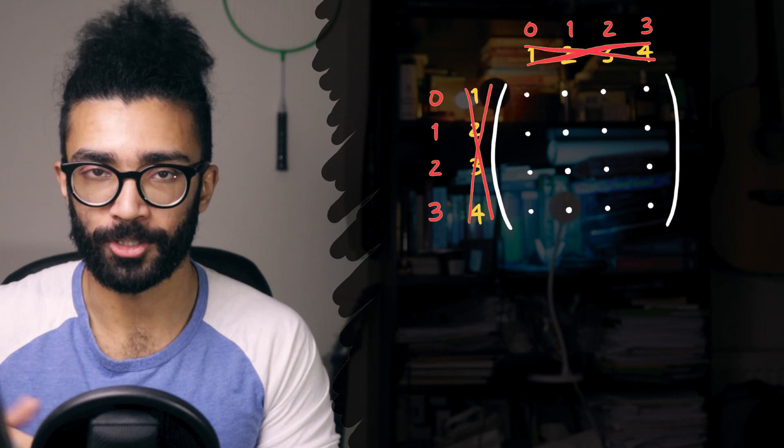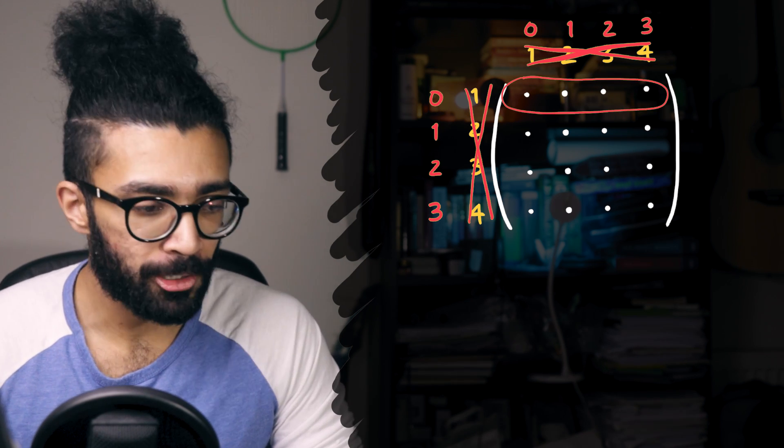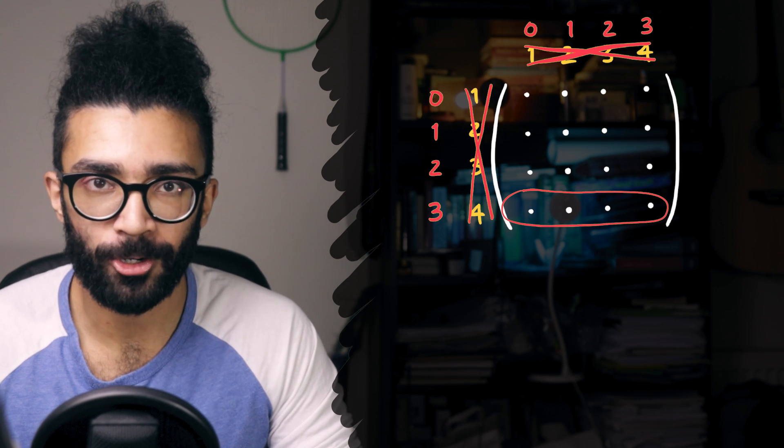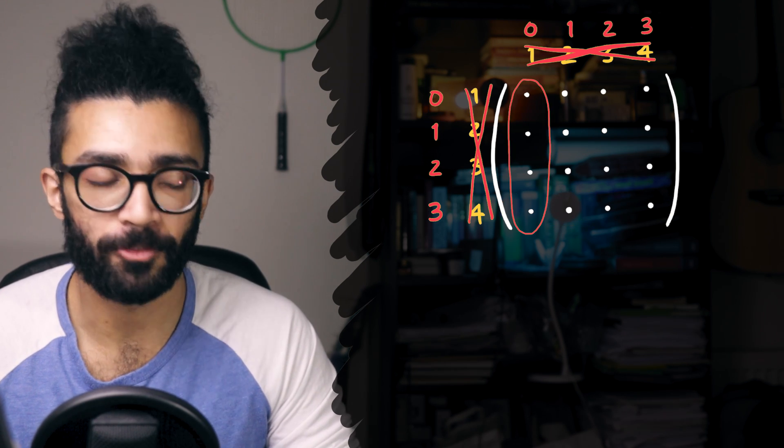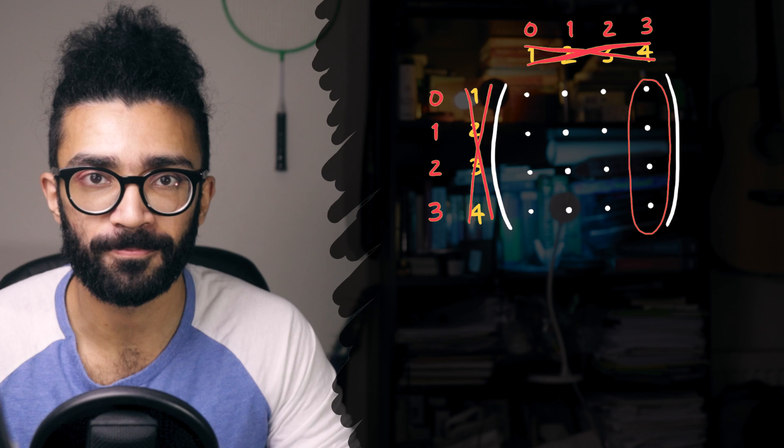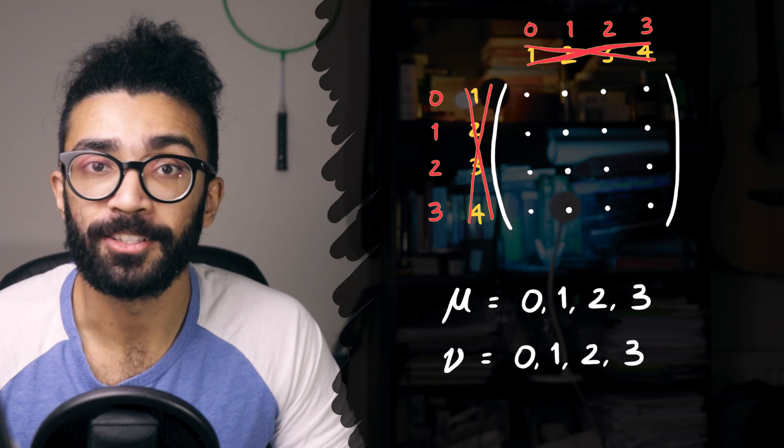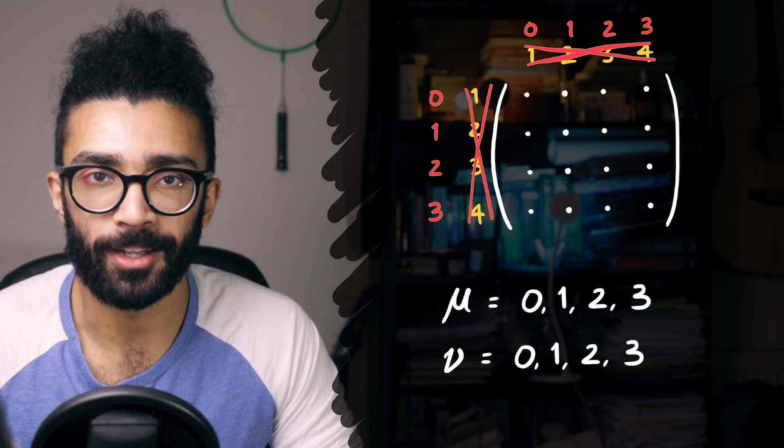Rather than 1, 2, 3, and 4. So we've got the zeroth row, first row, second row, and third row. And similarly, we've got the zeroth column, first column, second column, and third column. In other words, our subscripts mu and nu can take the values of 0, 1, 2, and 3.